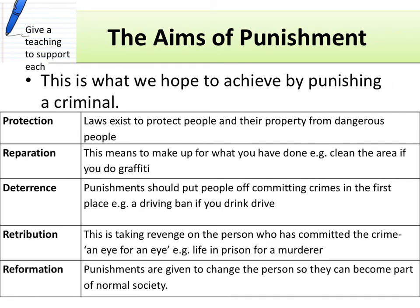Next we need to look at the aims of punishment — what we hope to achieve by punishing a criminal. This can be divided into five different parts. As we go through, attach a religious teaching to each one. The first is protection: the idea that laws exist to protect people and their property from dangerous criminals. For example, we put people in prison if we think they're dangerous, keeping them away from the rest of society. The next is reparation — making up for what you've done, for example cleaning an area if you've done graffiti.